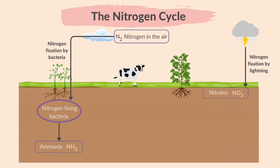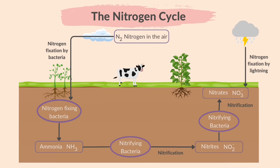Nitrogen fixation can also occur through the action of lightning, where atmospheric N₂ is converted eventually into nitrates in the soil. Plants prefer to absorb nitrates rather than ammonia compounds through their roots. Once N₂ has been converted into ammonia, it can be changed to nitrates by microorganisms called nitrifying bacteria. Nitrification is the process where ammonia is converted into nitrites and then nitrates by nitrifying bacteria, making them absorbable by plants.